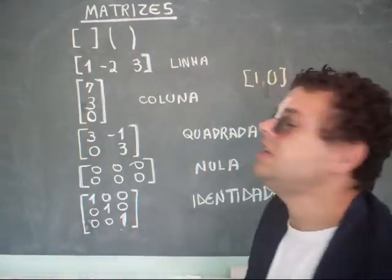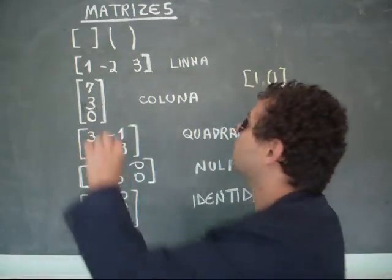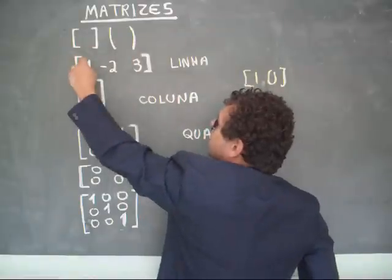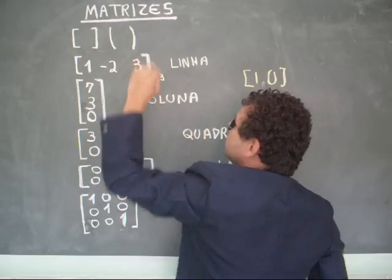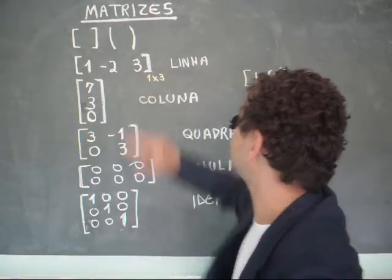Eu tenho uma matriz linha. O que seria uma matriz linha? Ela ocupa apenas uma linha. Então, aqui teria uma linha e três colunas. Então, por isso que eu represento um por três.